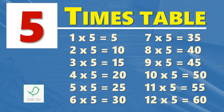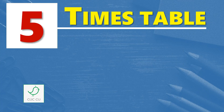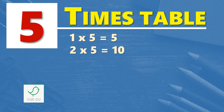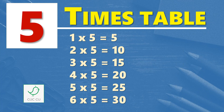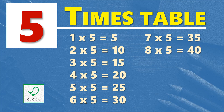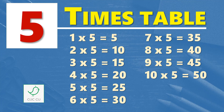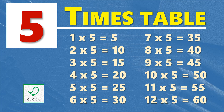Multiplication table of five. Five times table. One times five is five, two times five is ten, three times five is fifteen, four times five is twenty, five times five is twenty-five, six times five is thirty, seven times five is thirty-five, eight times five is forty, nine times five is forty-five, ten times five is fifty, eleven times five is fifty-five, twelve times five is sixty.